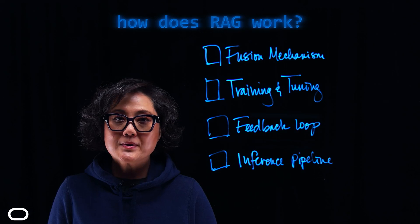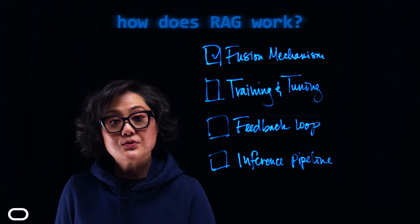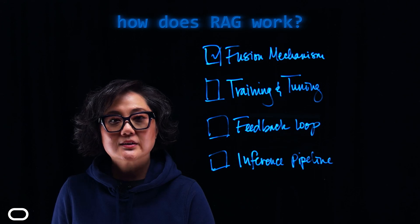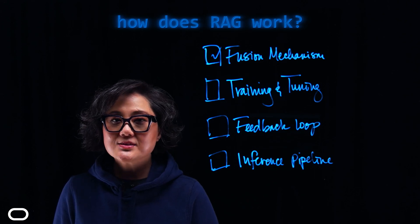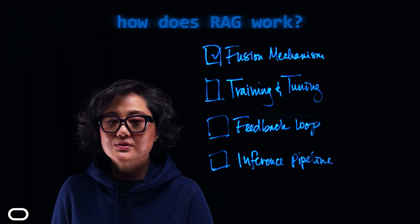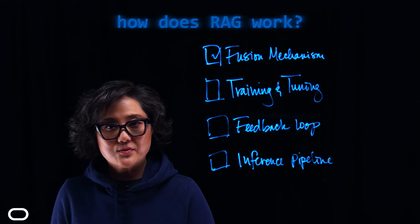After Retrieval Mechanism, we have Fusion Mechanism. This is a method to merge or fuse the retrieved documents with the original input query, called Context Fusion. And this could involve concatenation, attention mechanisms, or other techniques to ensure that the generator effectively utilizes the retrieved information.